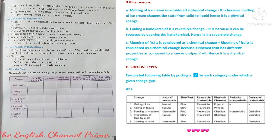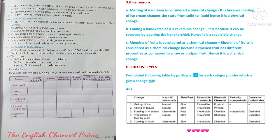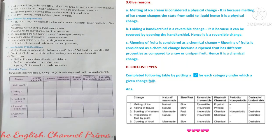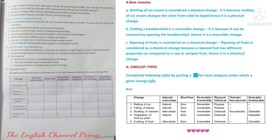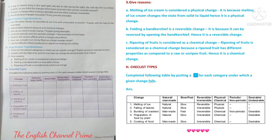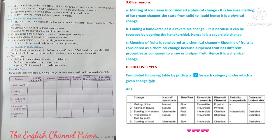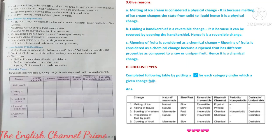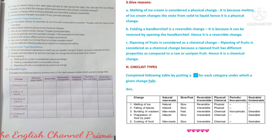Section H — Checklist type. Complete the table by putting a tick for each category under which a given change falls. First, melting of ice: natural change, slow change, reversible change, and physical change. Second, falling of leaves: natural, slow, irreversible, and physical change. Third, bursting of crackers: man-made change, fast change, irreversible change, chemical change, non-periodic change, and desirable change. Fourth, preparation of food by plant: natural change, slow change, irreversible change, chemical change, and desirable change. Fifth, cooking of food: man-made change, slow change, irreversible change, chemical change, and desirable change.